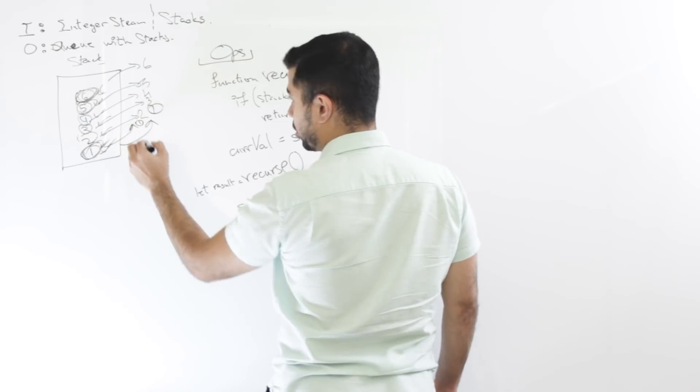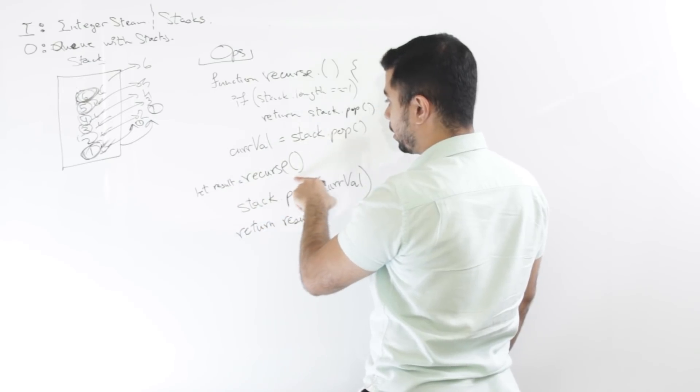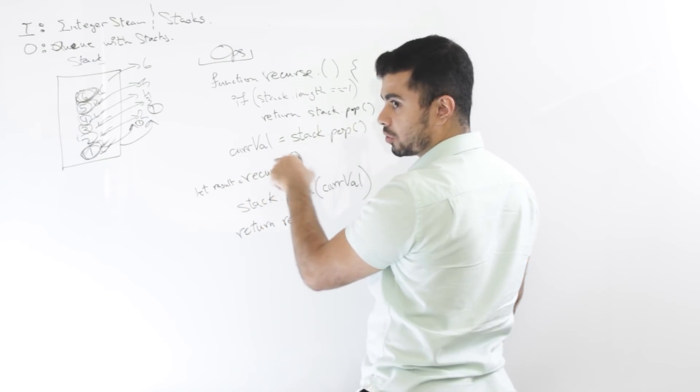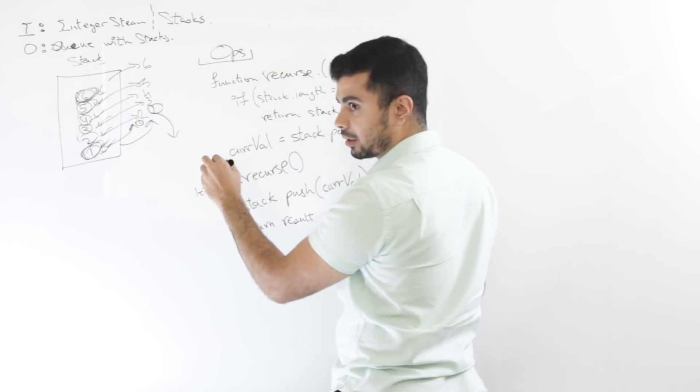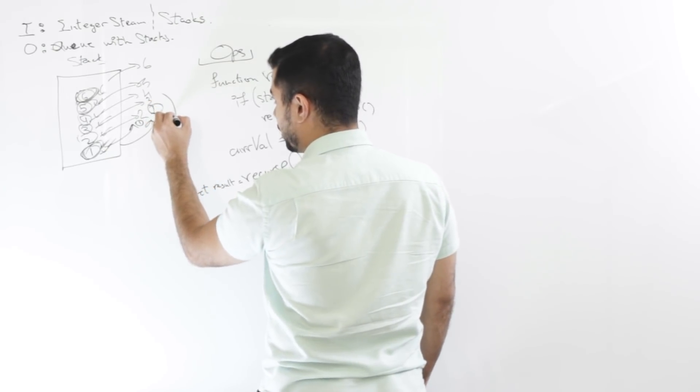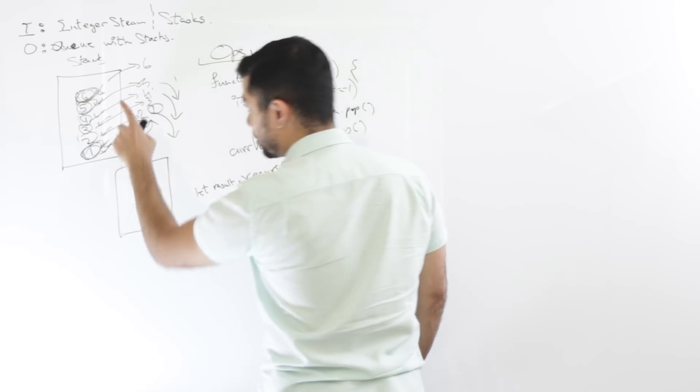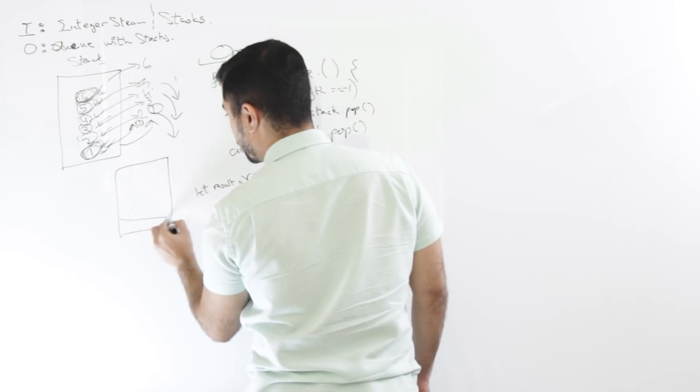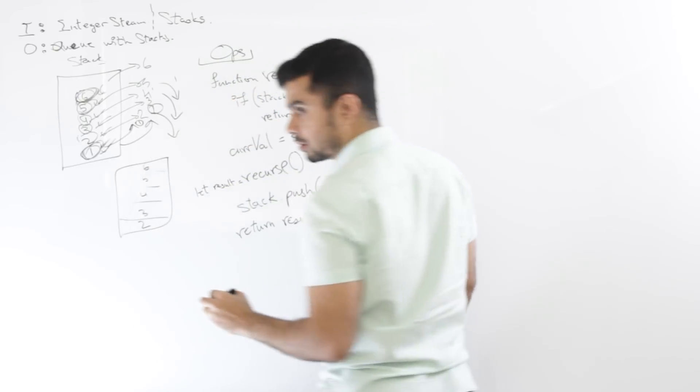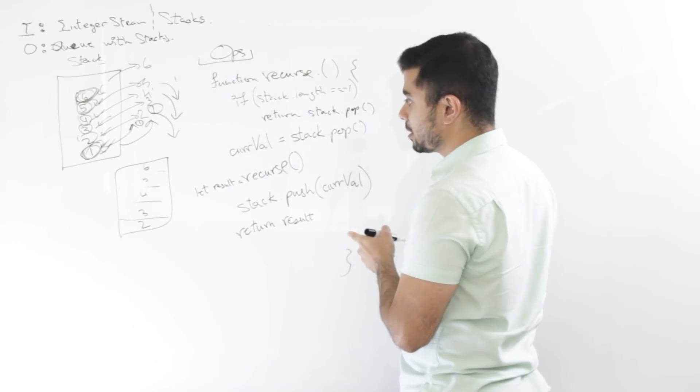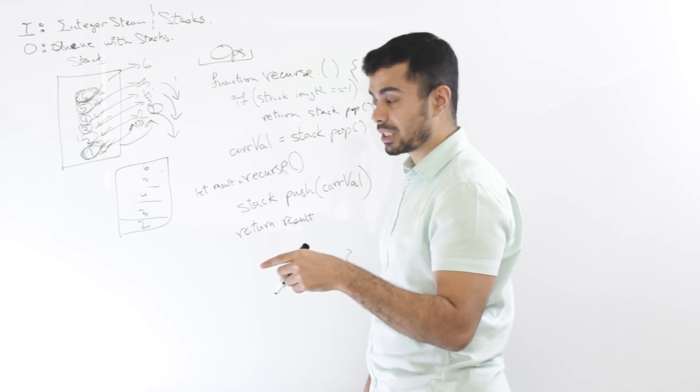So what happens is one is returned, right? And then, for the second one, the recurse value that is returned is one. And then it pushes two back again. So two is now in the bottom of the stack. Mm-hmm. And then it returns three. Then three is pushed back again, bottom of the stack. It returns four, so on and so forth. So it's the same stack that we are operating on. Mm-hmm. So the final result of the stack will be two, three, four, five, and six. Mm-hmm. So this would give me the result, mimicking a queue using just one stack.